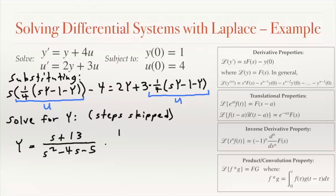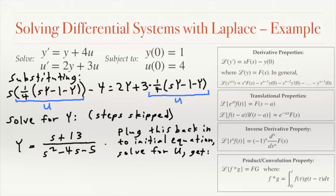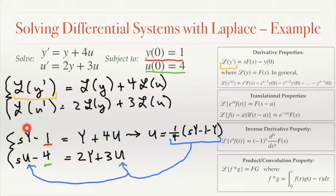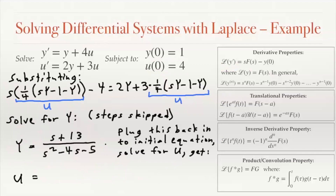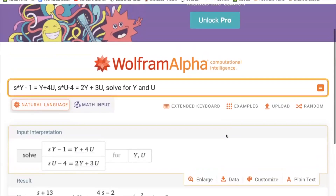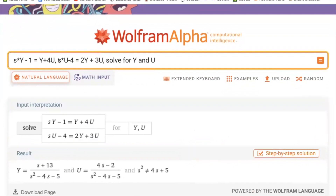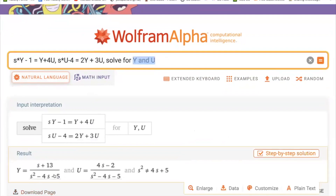We take this result and plug it back into an initial equation to solve for U. By substituting Y equals (s + 13)/(s² − 4s − 5) into that equation and solving for U, we end up with U equals (4s − 2) over (s² − 4s − 5). We can always check the algebra with Wolfram Alpha — entering our two equations and asking it to solve for Y and U confirms the system gives us those same results, which is tedious algebra but straightforward.